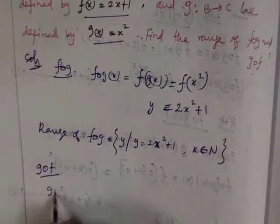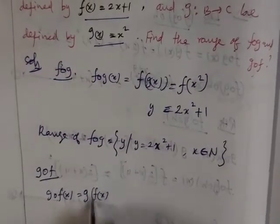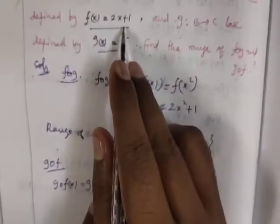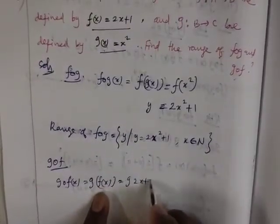Now for g composite f. g of f of x, where f of x has value 2x + 1. So g of 2x + 1.